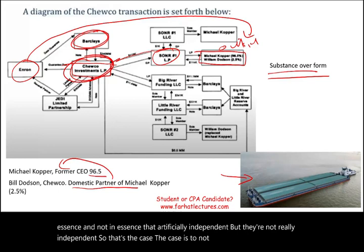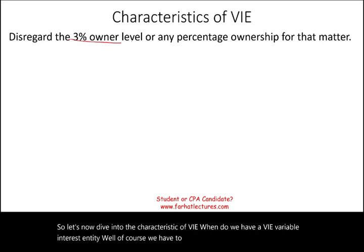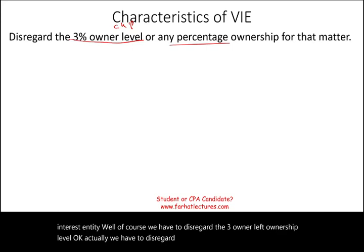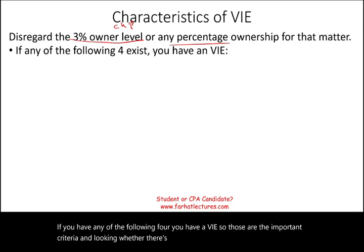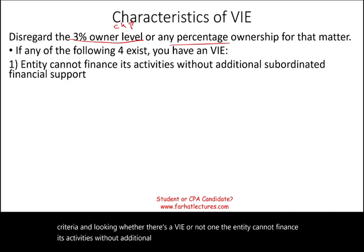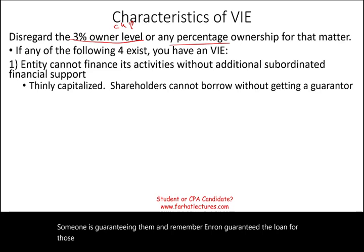Now let's dive into the characteristics of a VIE. When do we have a variable interest entity? We disregard any percentage ownership level. If you have any of the following four criteria, you have a VIE. One: the entity cannot finance its activities without additional financial help, meaning the company is thinly capitalized — not enough equity — so shareholders cannot borrow without a guarantor, just as Enron guaranteed the loans for those SPEs.